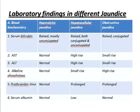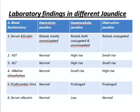Prothrombin time: normal in hemolytic jaundice, prolonged in hepatocellular jaundice, prolonged in obstructive jaundice. Serum albumin: normal in hemolytic jaundice, low in hepatocellular jaundice, normal in obstructive jaundice. This difference among the three types of jaundice is very, very important. You must remember this.